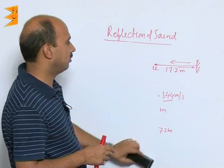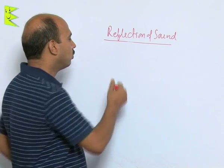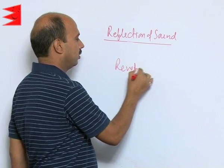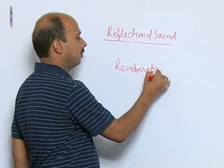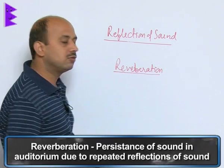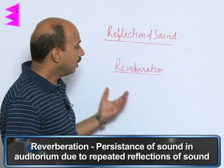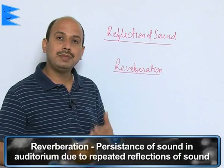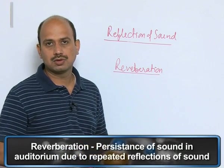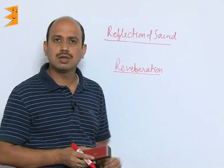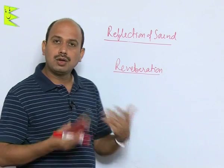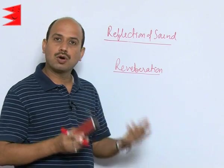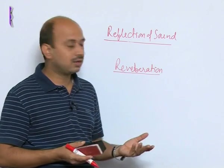There is another application of reflection of sound that is called reverberation. Reverberation is basically the persistence of sound in an auditorium due to repeated reflection of sounds. Suppose in a cinema hall, sound is coming continuously and getting reflected from all around, and it persists for a long time — then you cannot hear any sound clearly.